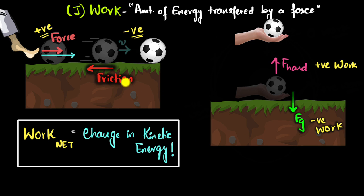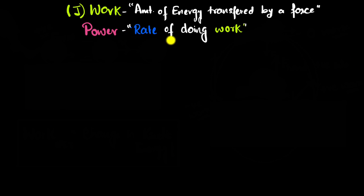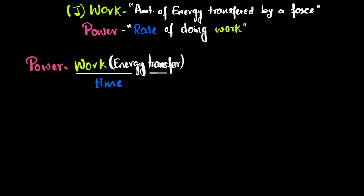In all these cases we considered how much energy was being transferred. But in practical cases we are also interested in how quickly that work is being done — how quickly energy is being transferred. That quantity is called power. Power is the rate of doing work — how quickly work is done or energy is transferred. Mathematically, power equals work done per time, or energy transferred per time. Its unit is joules per second, it is a scalar quantity, and joules per second is called the watt — named after James Watt.